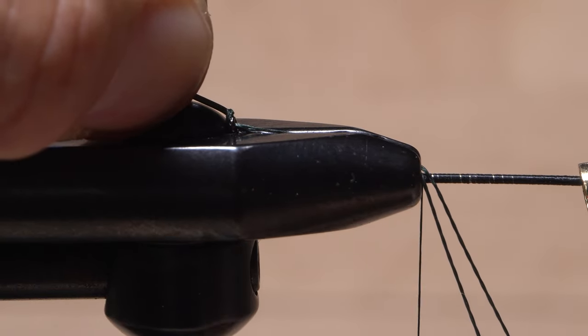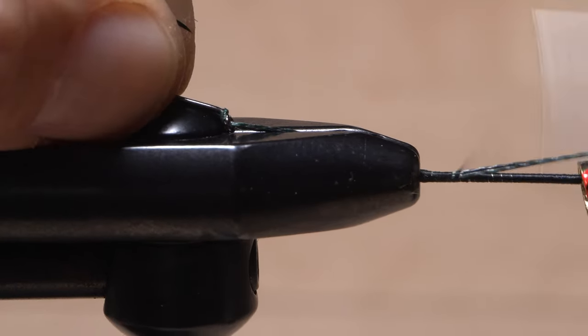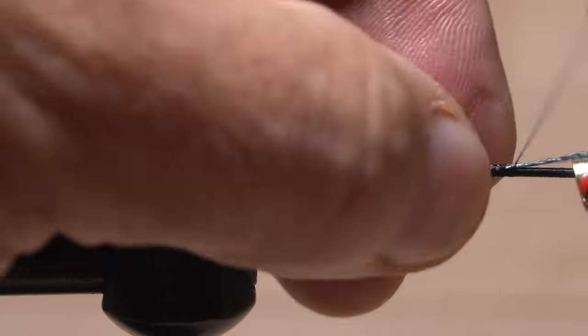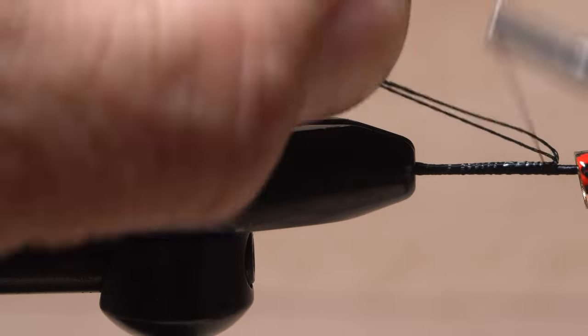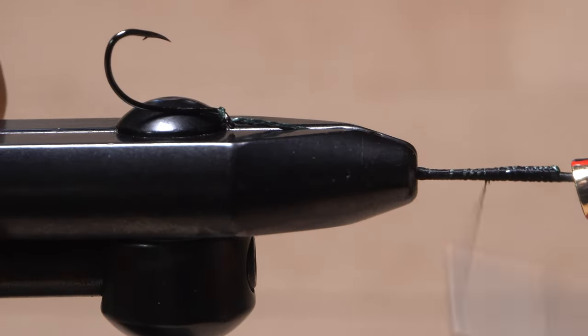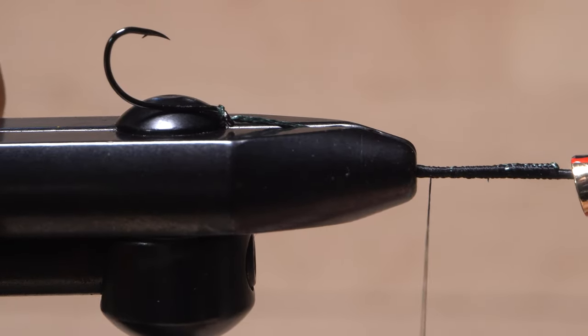Then double it back and secure that for a ways before snipping the excess off and binding it down.